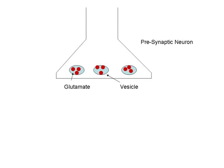This brief, simplified animation describes the mechanism of excitotoxicity caused by glutamate following a stroke.